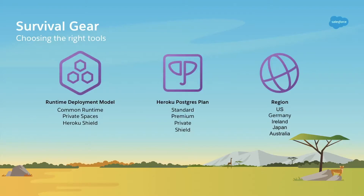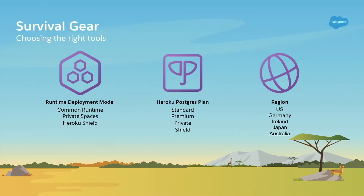At the start, you're going to have some high-level decisions to make about how you're going to use the Heroku platform, based on the type of organization you're in and whether you have compliance mandates or data residency concerns. In the runtime deployment model, we're talking about whether you have your application running in our common runtime, which is highly multi-tenant and less expensive, or private spaces, which are more isolated. If you're familiar with AWS concepts, it's your own VPC as part of that private space — greater isolation, more predictable performance, and greater security. All the way up to our Heroku Shield deployment model, which is private spaces further locked down for compliance mandates.